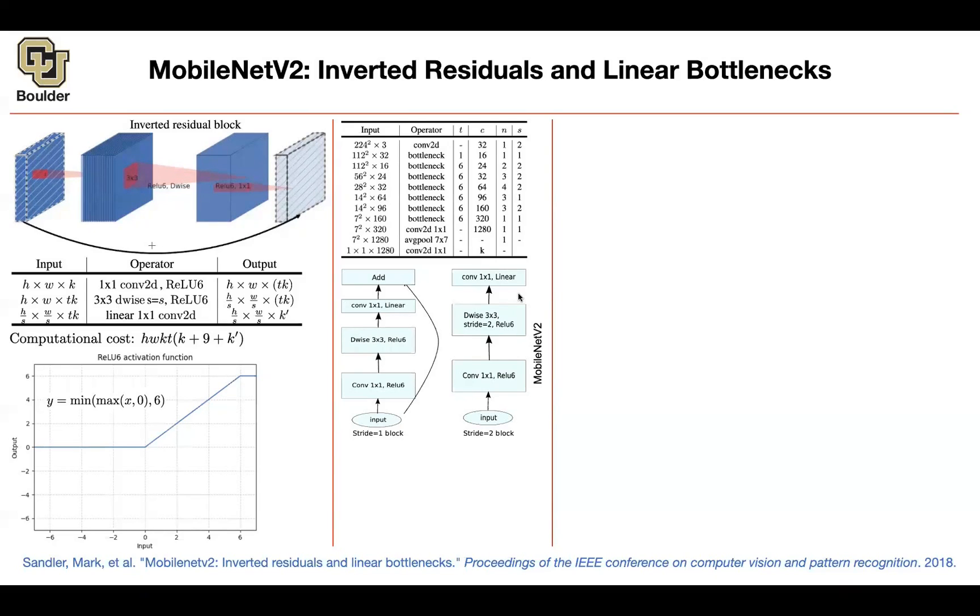Sorry if I missed this, but going back to the dimensions, I thought the initial input and the final output should match to be able to add them? Yes. So sometimes they match, and then you can add them. Sometimes they don't match, and then you're not going to add. So it depends on your choice of S and T. It depends on the choice of S and K prime, to be exact. Because T, we are taking care of it.